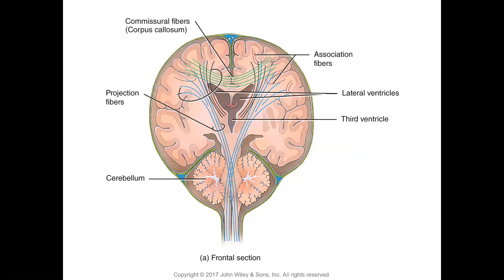The cerebrum is made up of the right and left cerebral hemispheres. It is the largest and most complex division of the brain, superior to and surrounding the diencephalon and part of the brain stem. The cerebrum is the center for all higher mental processes such as intelligence, communication, learning, memory, reasoning, and emotion. It interprets sensory information and initiates skeletal muscle contractions.